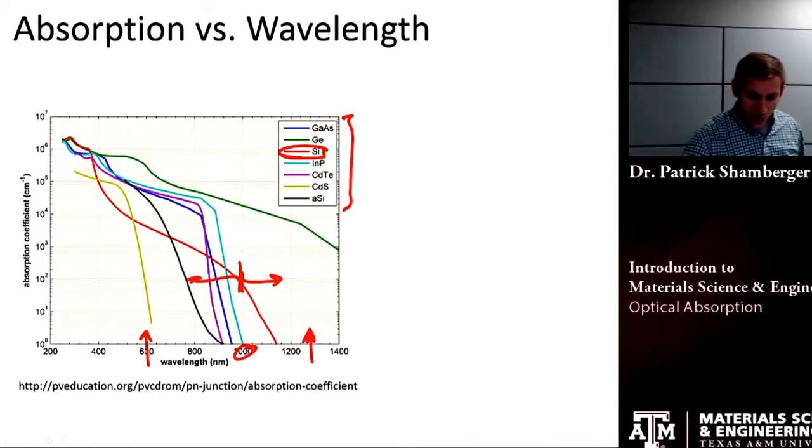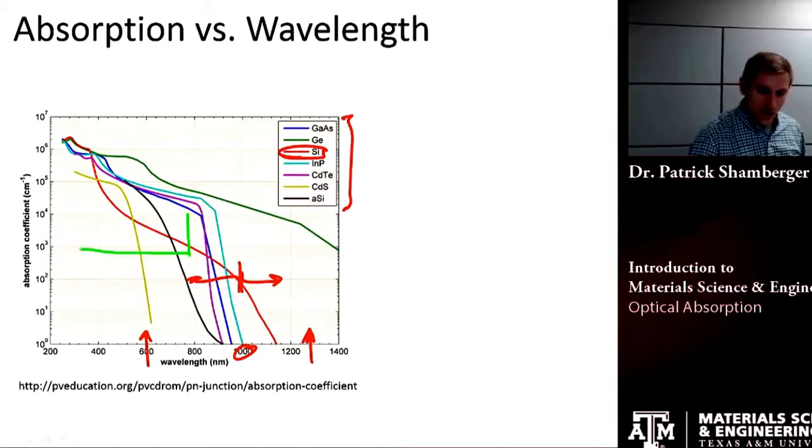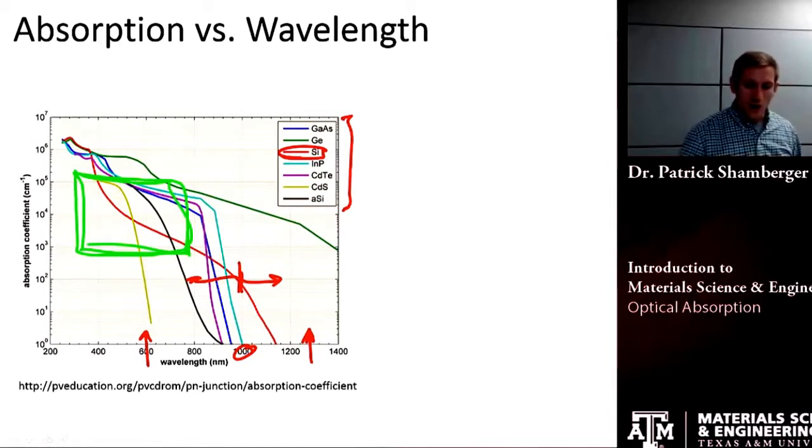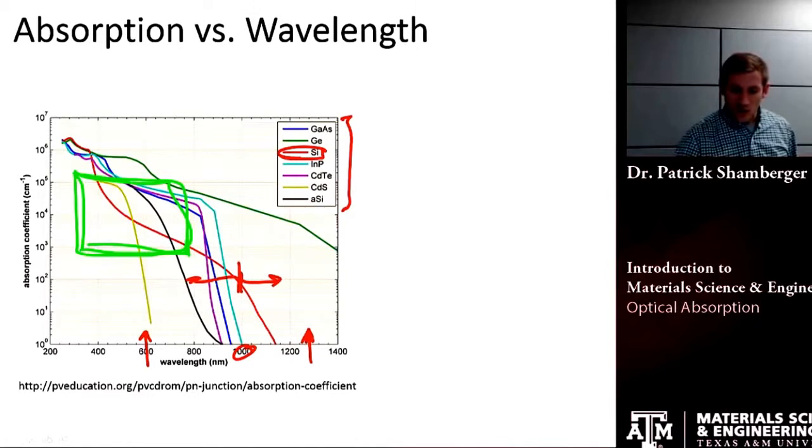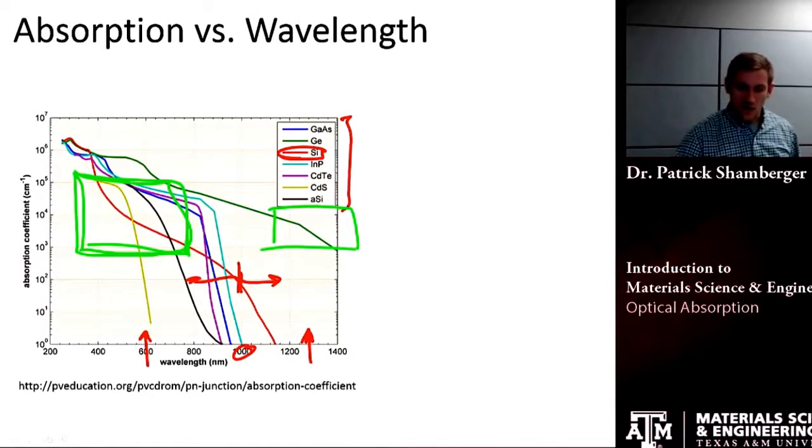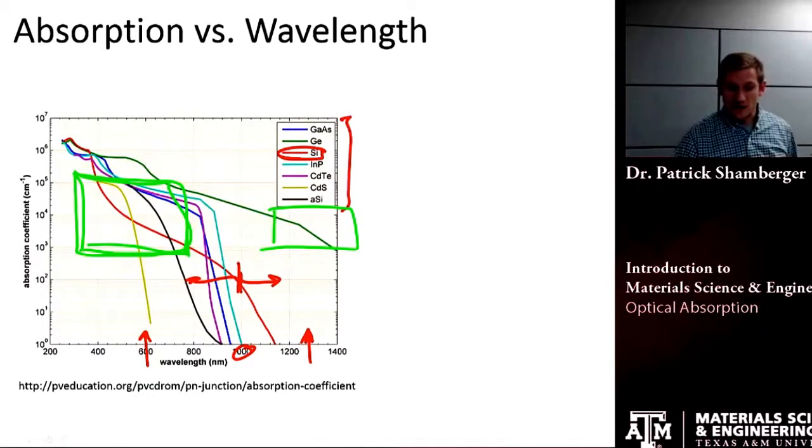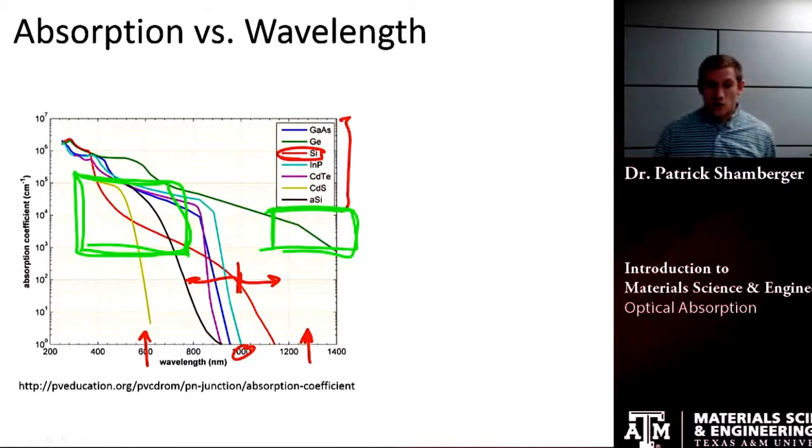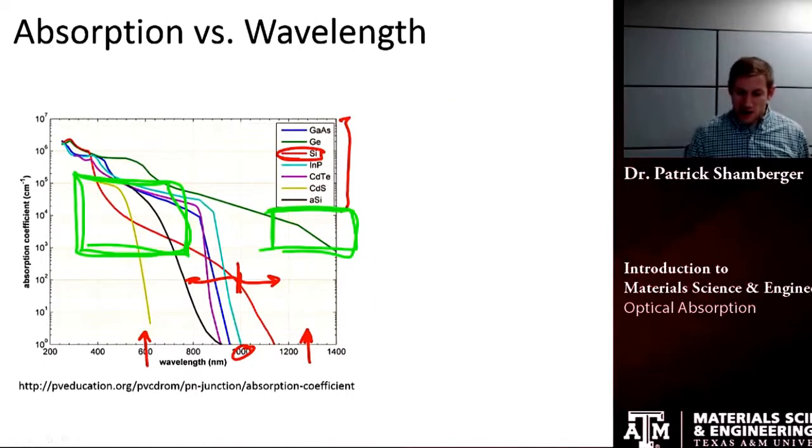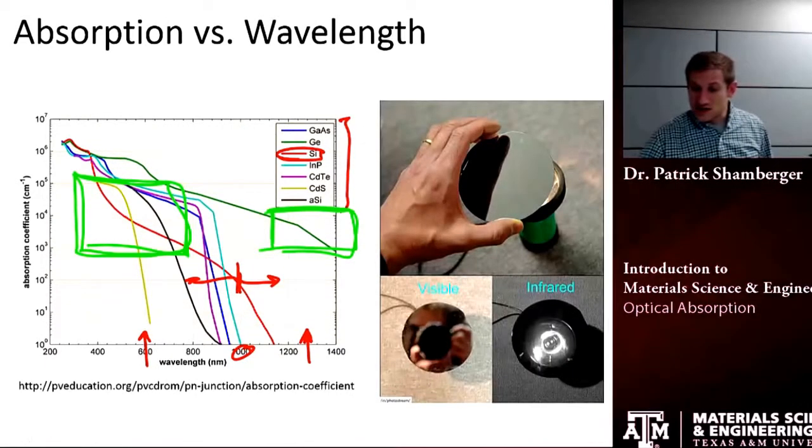Silicon will strongly absorb throughout most of the visible spectrum. But what if we look at something with lower energy than visible light, so IR radiation? This would tell us that silicon would not absorb strongly in the IR spectrum. And indeed, this is true.